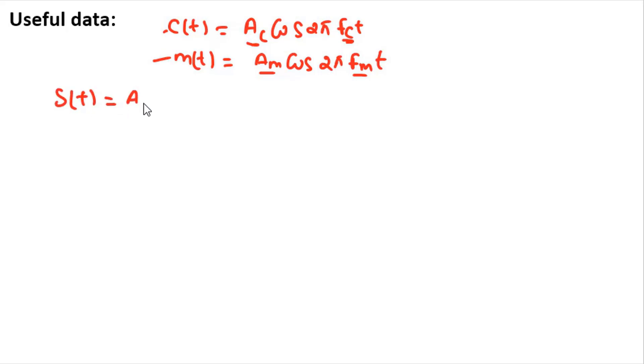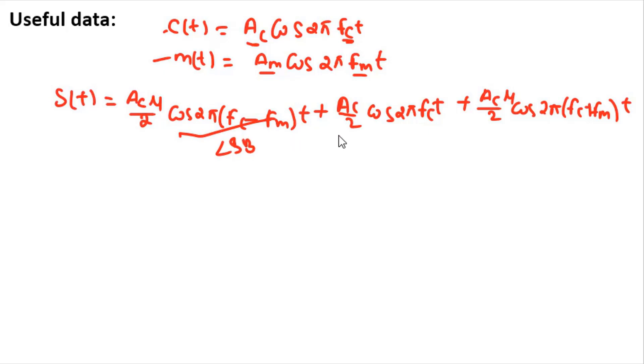Ac μ over 2 cos 2π(fc minus fm)t plus Ac cos 2π fc t plus Ac μ over 2 cos 2π(fc plus fm)t. This is your LSB, and this is your carrier, and this is your upper sideband USB. So this is the useful data for this question.